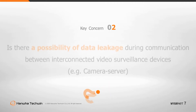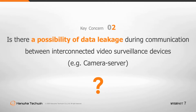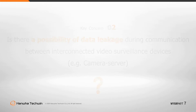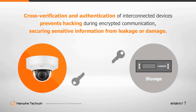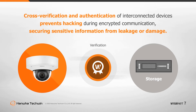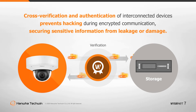Is there a possibility of data leakage during communication between interconnected video surveillance devices? To achieve safe communication between interconnected security devices, encryption must be used to protect communication and all devices should be cross-verified and authenticated. Without mutual authentication, hackers can employ the man-in-the-middle attack to eavesdrop or tamper with the data during encrypted communication.